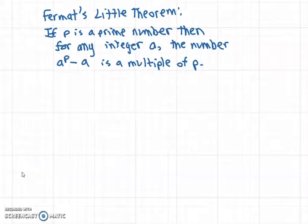Today I'll be proving Fermat's Little Theorem. The theorem states that if p is a prime number, then for any integer a, the number a^p minus a is a multiple of p.